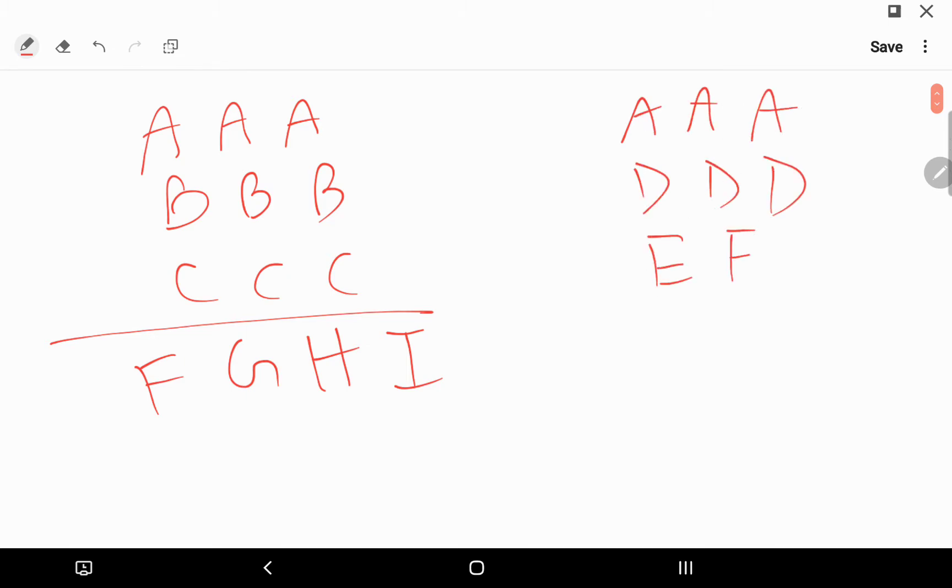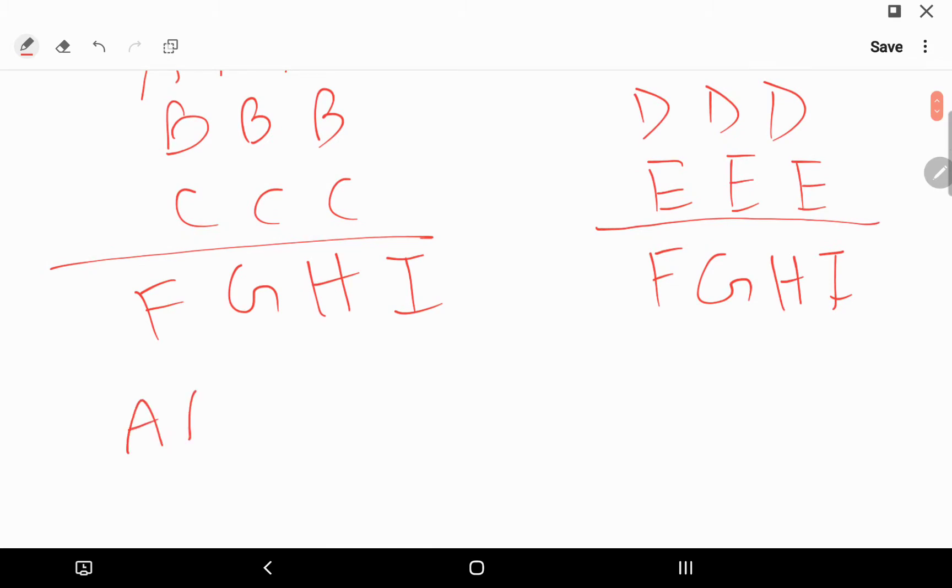It is given that AAA plus BBB plus CCC equals FGHI. Similarly, it is given AAA plus DDD plus EEE equals FGHI. Now, AAA means what? 100A plus 10A plus A, that is 111A.